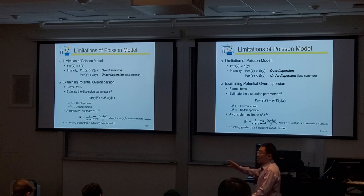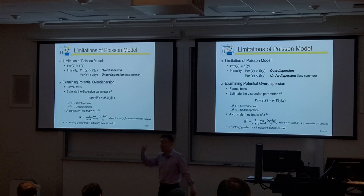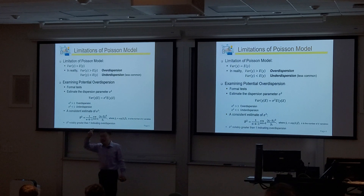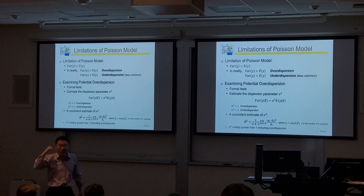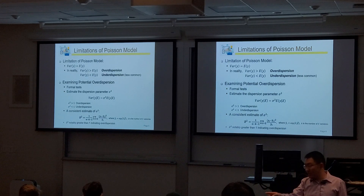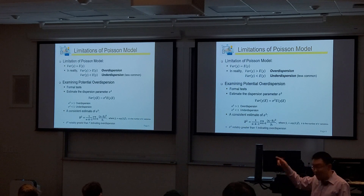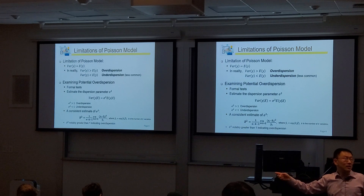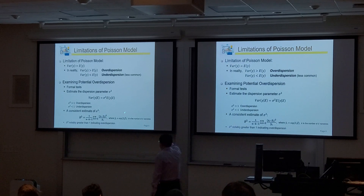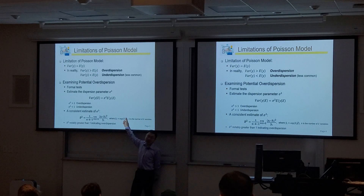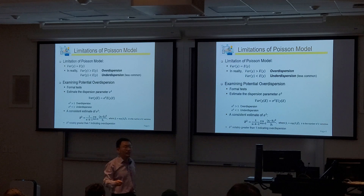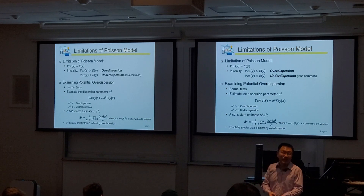Similarly, in the Poisson model, y-hat is also the expected value of y. In the Poisson regression model, the expected value of y is lambda, and lambda is modeled as the exponential of x and beta. So y-hat is simply the exponential of x-beta. Make sure you understand that — this is the expected value of y given that particular observation's x values.